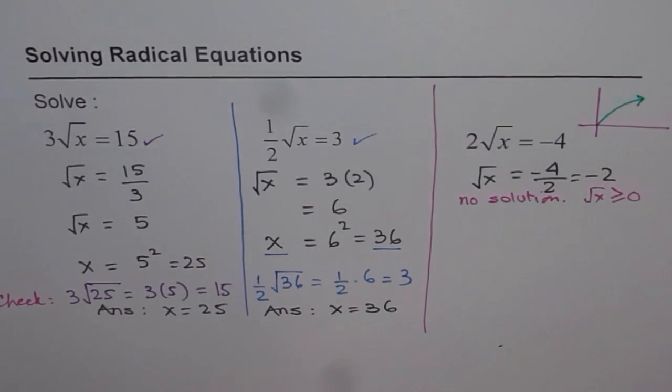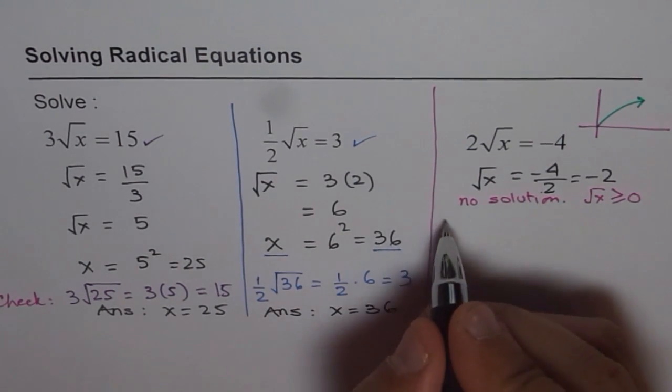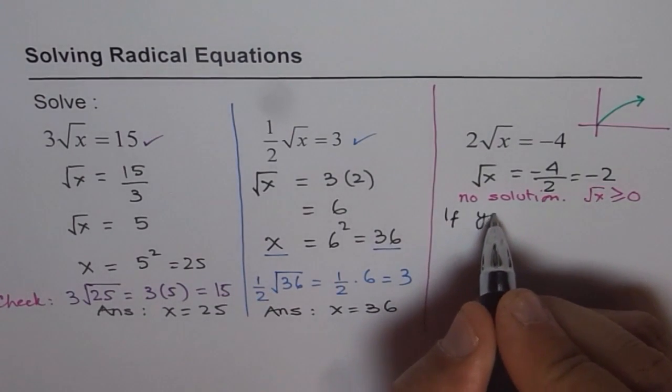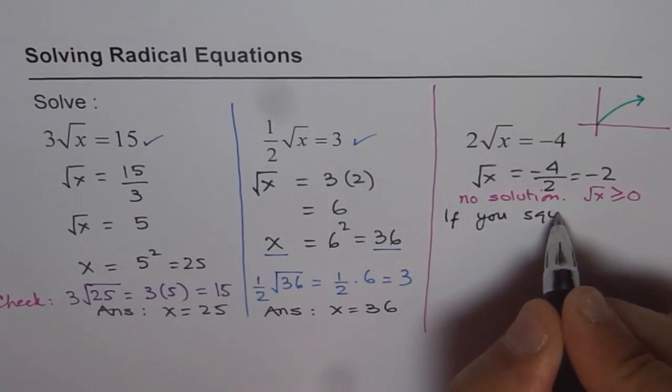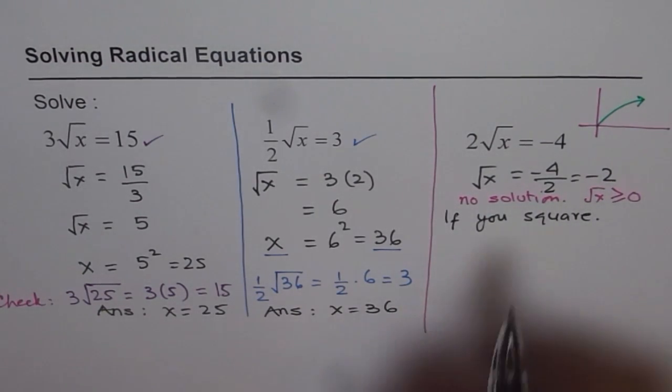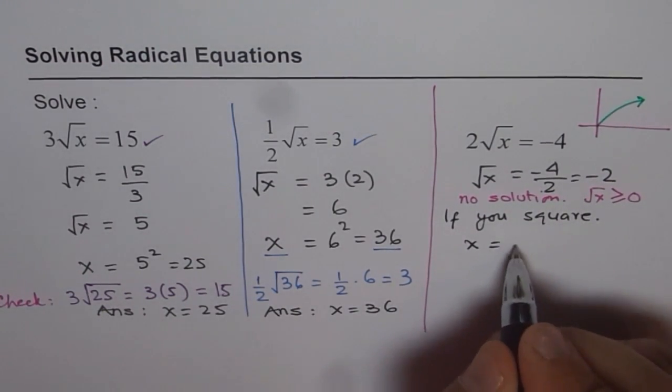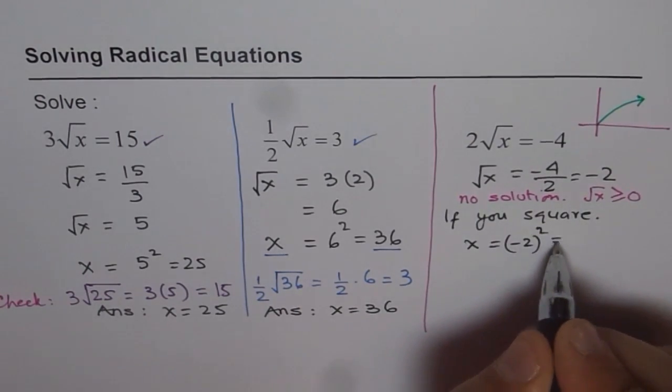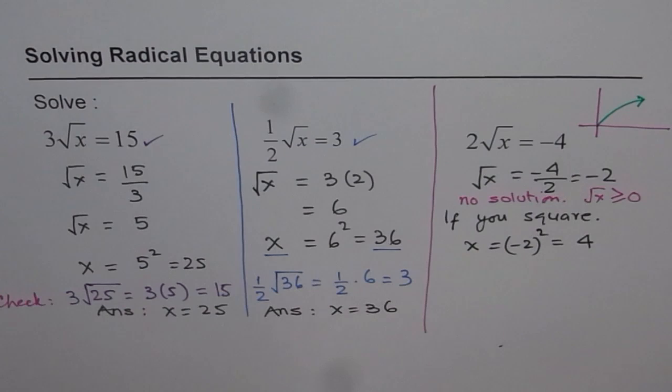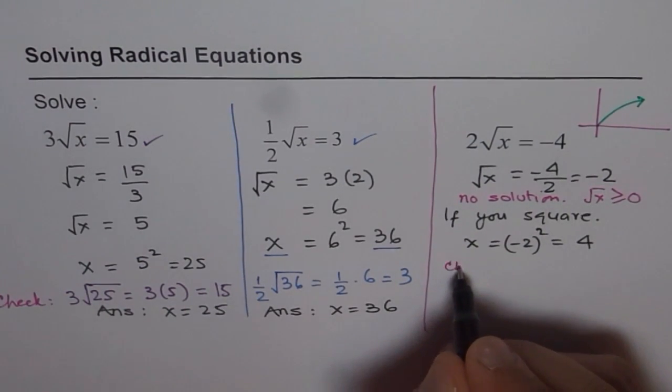But if you follow, if you follow, square, what happens? Let us check that part. If you square, then you get x = (-2)², which is 4. Now you get x = 4, let us check this answer.